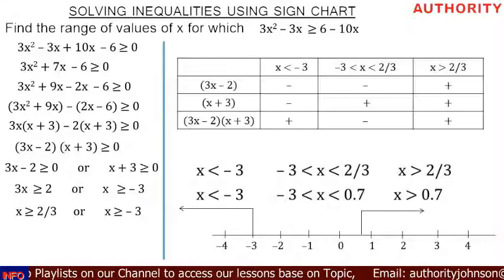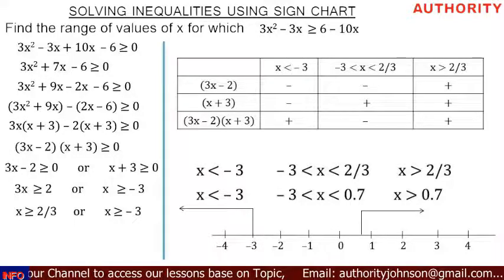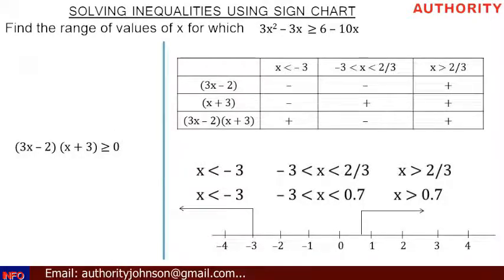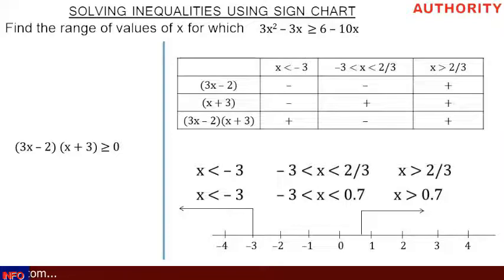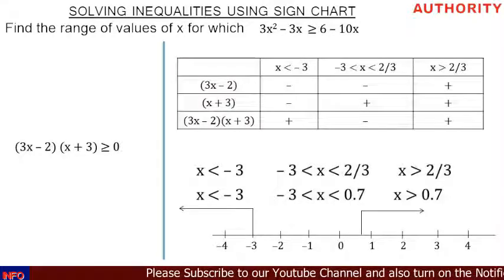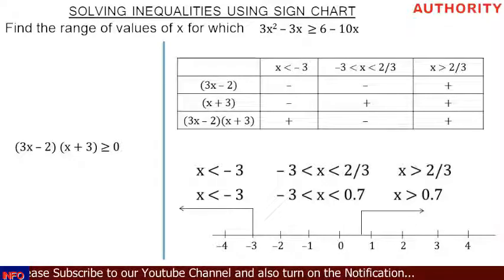Now let's draw a sign chart to find the accurate range of values that satisfies the inequality. We'll set up a 4 by 4 table. In the first row we fix the ranges, and in the columns we fix the factors: 3x minus 2 and x plus 3. Below that, we record the product (3x minus 2)(x plus 3).